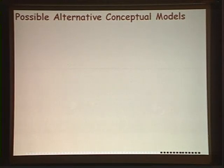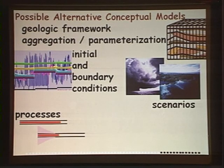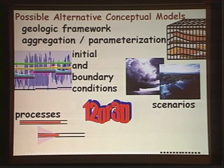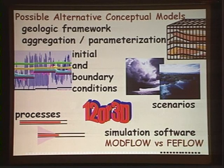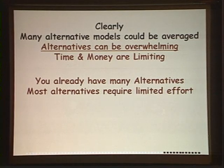There are many possible alternative conceptual models — we can vary the geologic framework, initial and boundary conditions, scenarios, processes included, dimensionality, and even what software we use. Combining all these variations results in quite a lot of models, which can be overwhelming given time and money constraints. However, you already have many alternative models on your computer — rarely does anyone use the same model at the end of a project as at the beginning. Generating alternatives now requires only limited effort with GUIs and automated calibration tools.